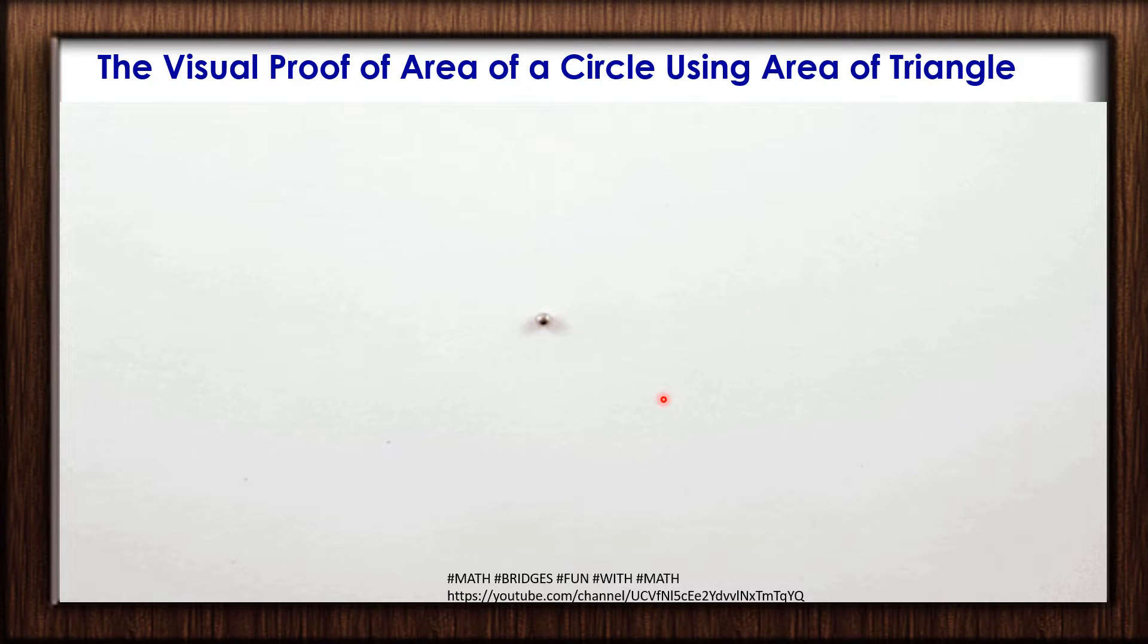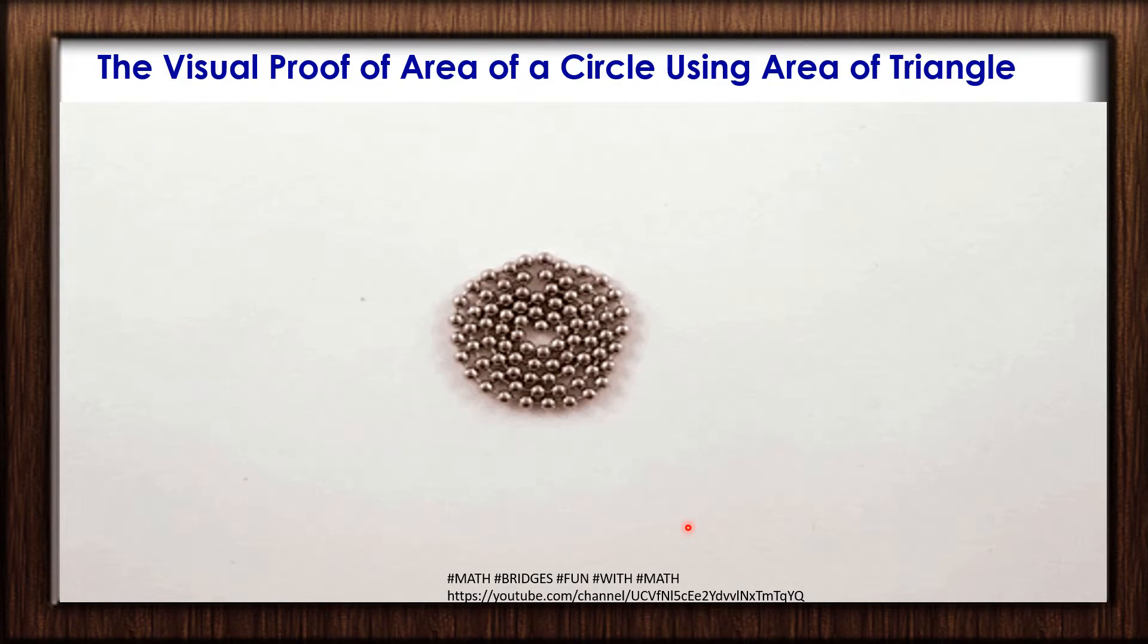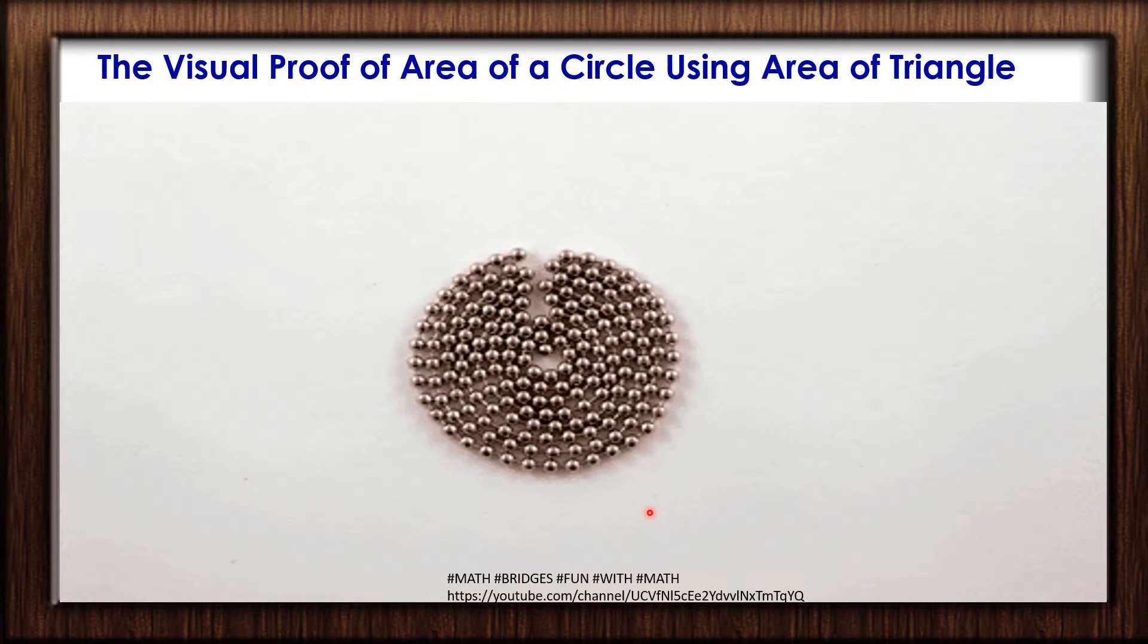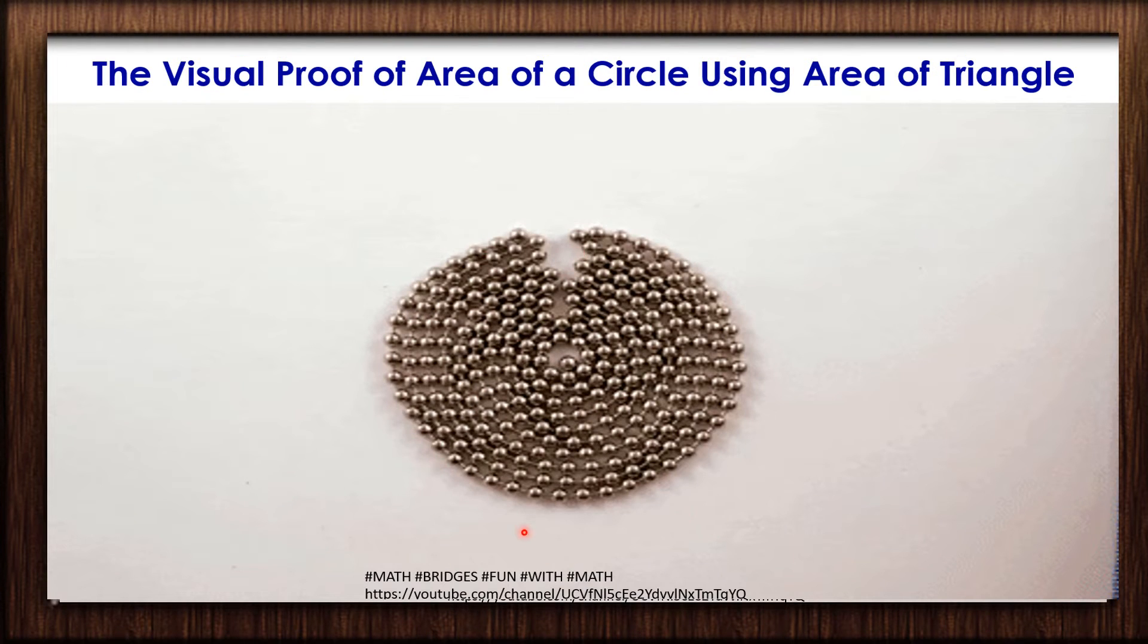Take a plank, chart paper, or the ground - wherever you are performing the activity. First, place the first bead over there. Next, arrange the second one as one circle around the bead. You can cut the string beads and place them like this. The size of the circle keeps on increasing.